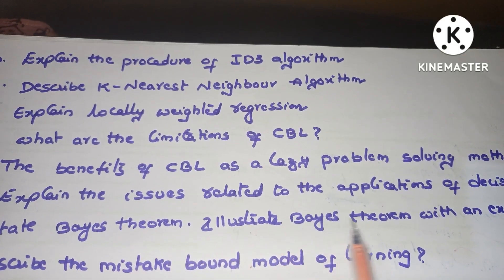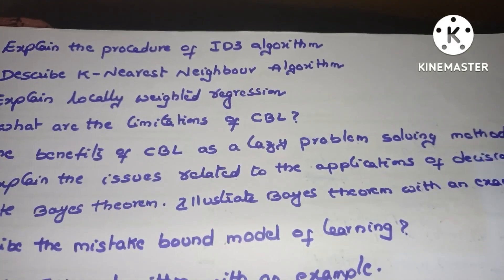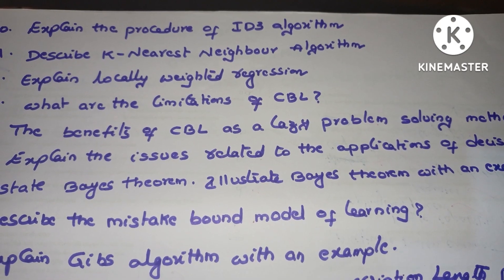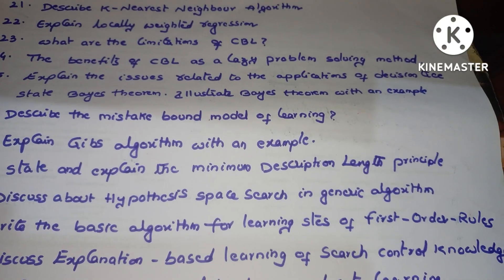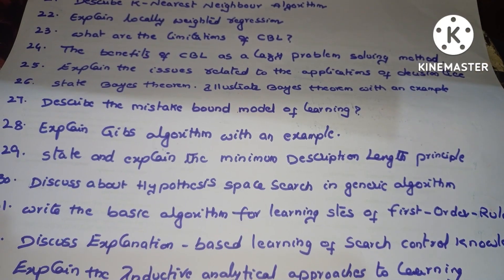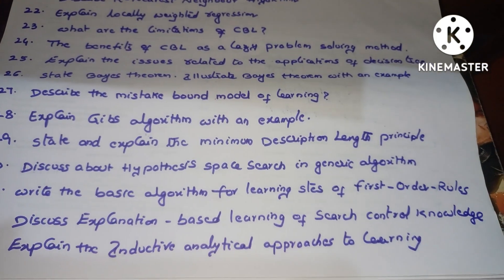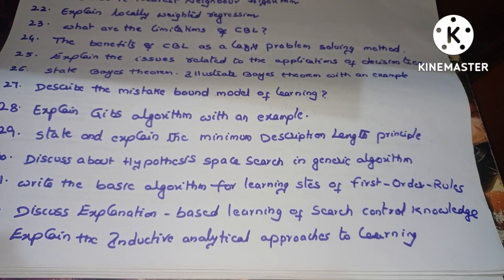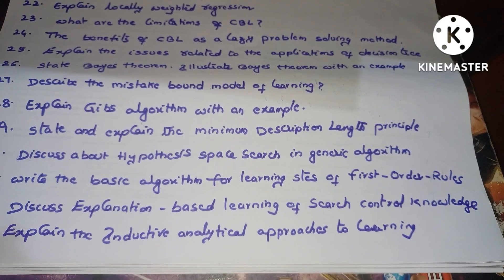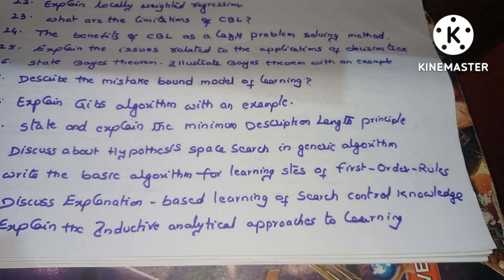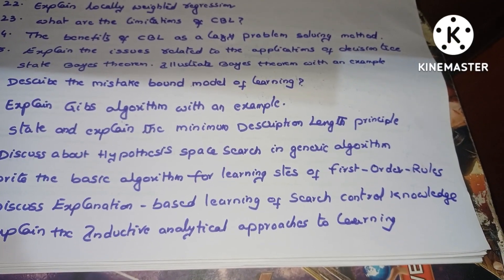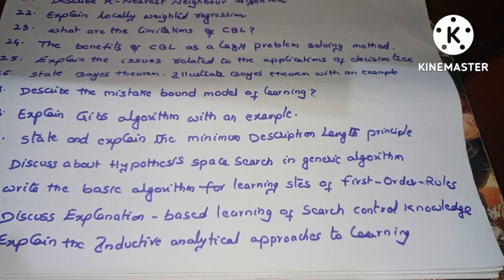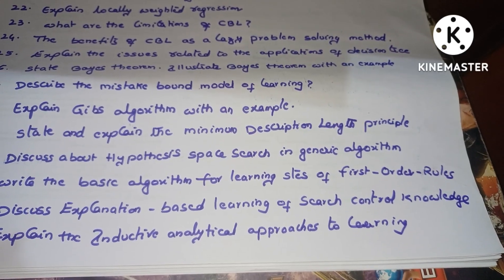State and illustrate Bayes theorem with an example. Describe the mistake bound model of learning. Explain Gibbs algorithm with an example. State and explain the minimum description length principle. Discuss about hypothesis space search in genetic algorithm and write the basic algorithm. Write the basic algorithm for learning sets of first-order rules. Discuss explanation-based learning of search control knowledge. Explain the inductive and analytical approaches to learning.